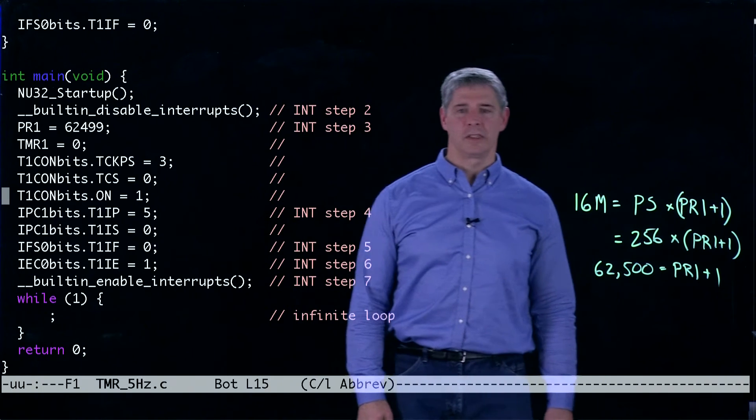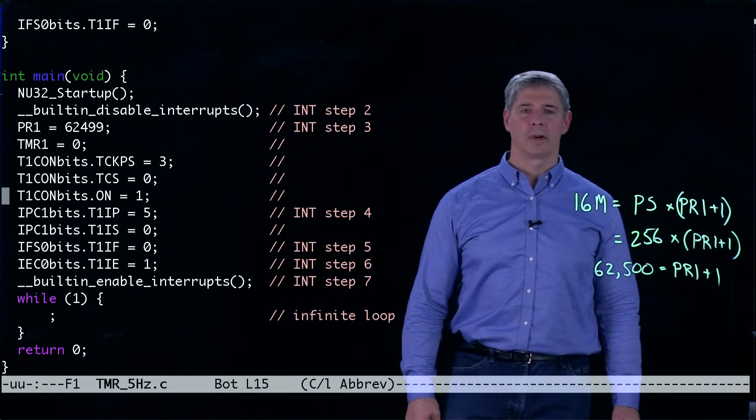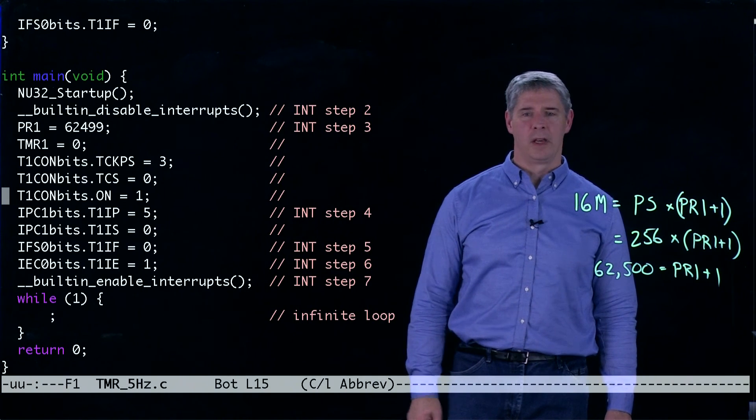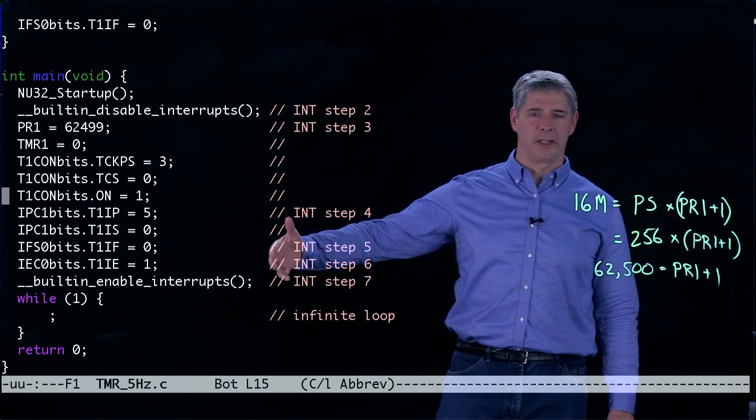The next step is to set the priority level for the timer1 interrupt that we have to set to 5 to match the interrupt service routine above. The interrupt sub-priority doesn't really matter.